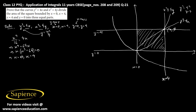This square is divided into three parts. Let's call them A1, A2, and A3. We need to prove that A1 equals A2 equals A3. The coordinates of the corners of this square are (0,4), (4,0), and the origin (0,0).